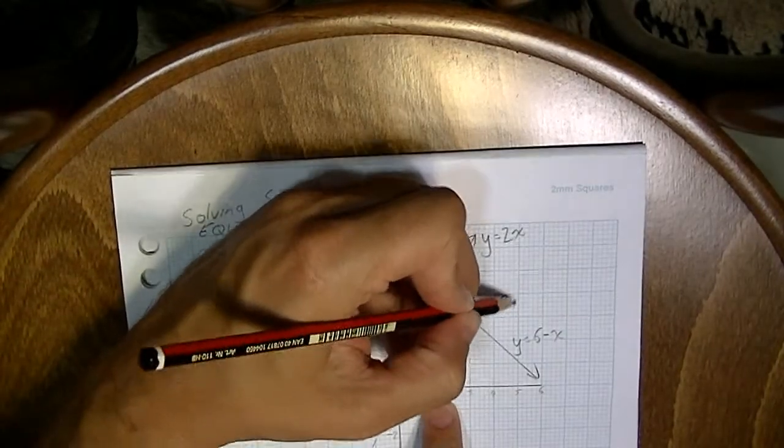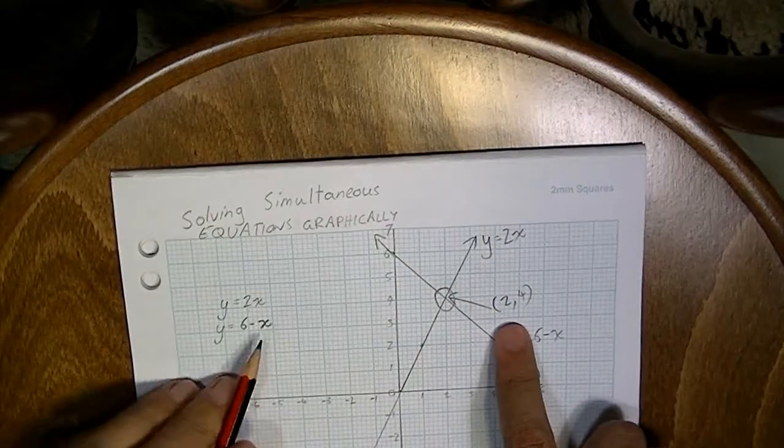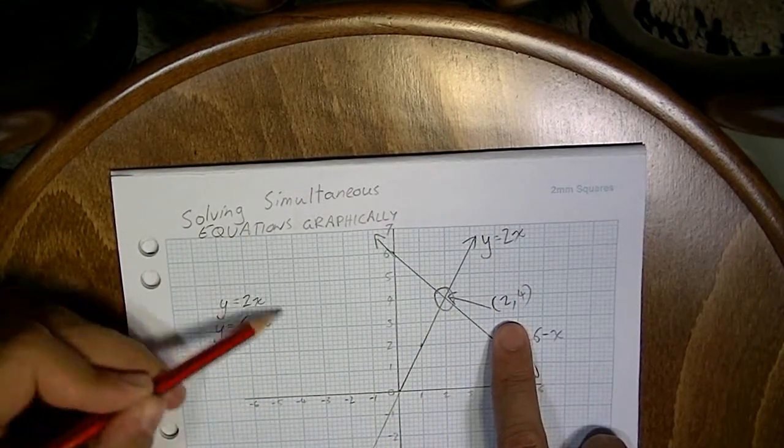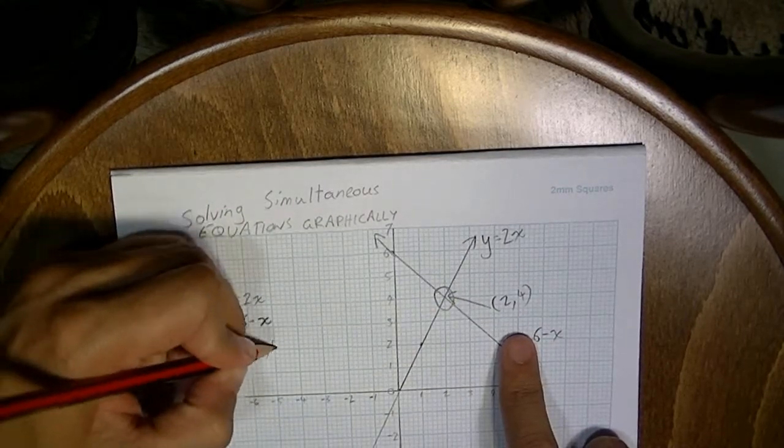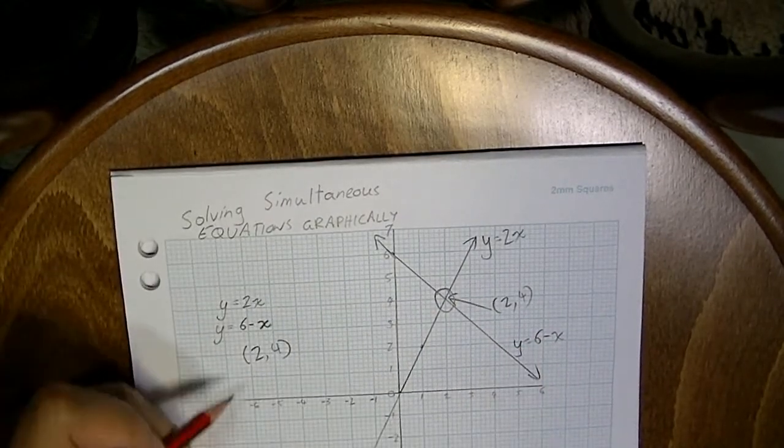Now if you watched the last video, you'll know that was coming. The simultaneous solution to these two equations is a point on a Cartesian plane. And that particular point is 2, 4.